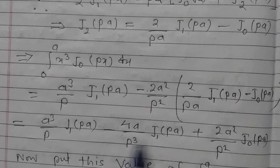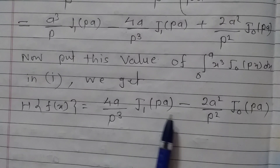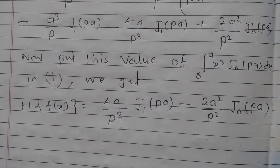Putting the value of this integral into equation number 1, we get the final result: the Henkel transform of f(x) equals (4a/p³) J₁(pa) minus (2a²/p²) J₀(pa). So we have completed the example section and this chapter is almost complete. The remaining problems are now your task to solve.